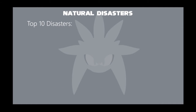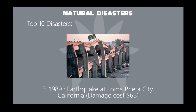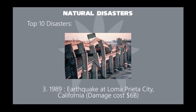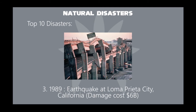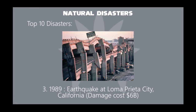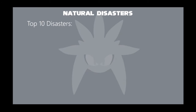In 1989, an earthquake occurred in Loma Prieta City on California's central coast on October 17 at 5 p.m., killing 63 people and injuring 3,757 people, who were taken into hospital. Its damage cost took $6 billion.